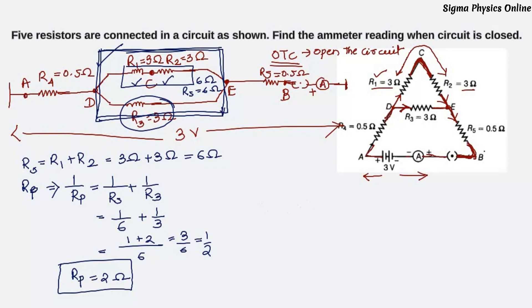Now we have three resistors R4, RP and R5 which are in series. R equivalent if I write it would be R4 plus RP plus R5. R4 is given as 0.5, RP we got it as 2 ohm and R5 is given as 0.5 ohm. We get R equivalent as 3 ohm. This is the equivalent resistance of this entire circuit.